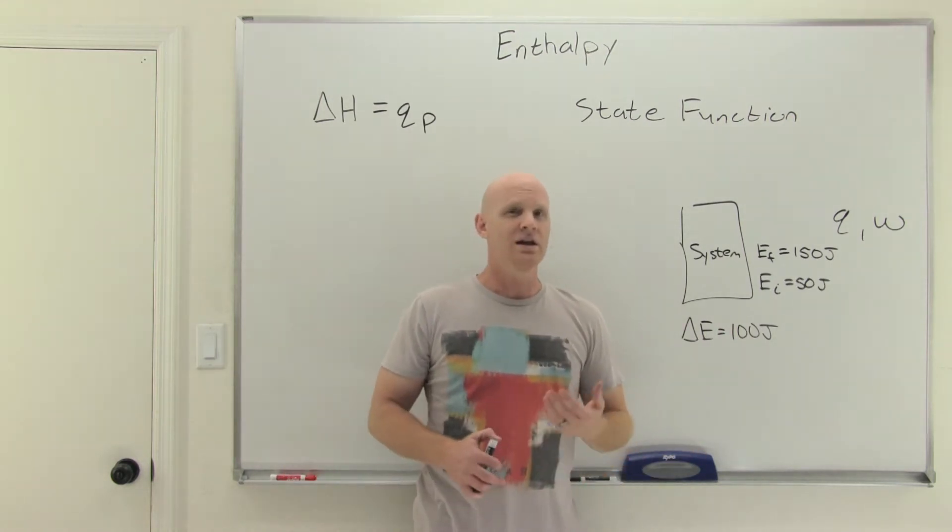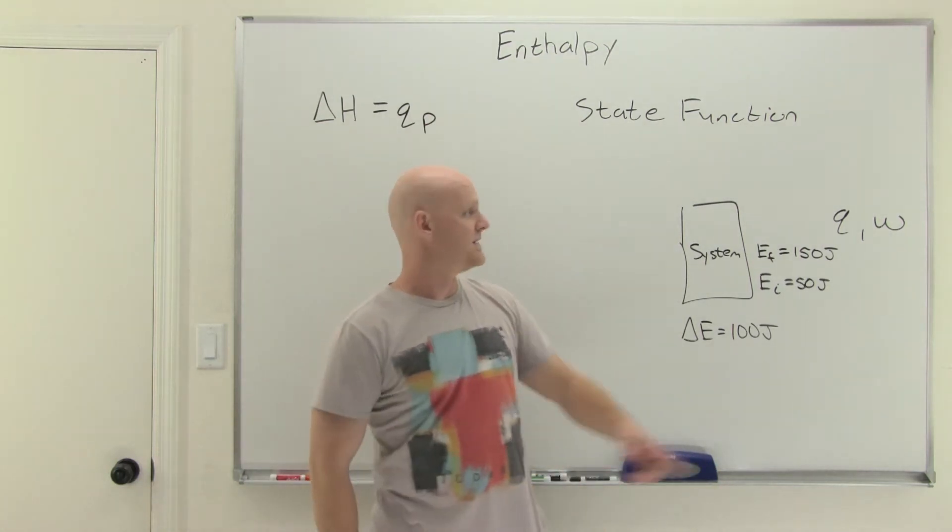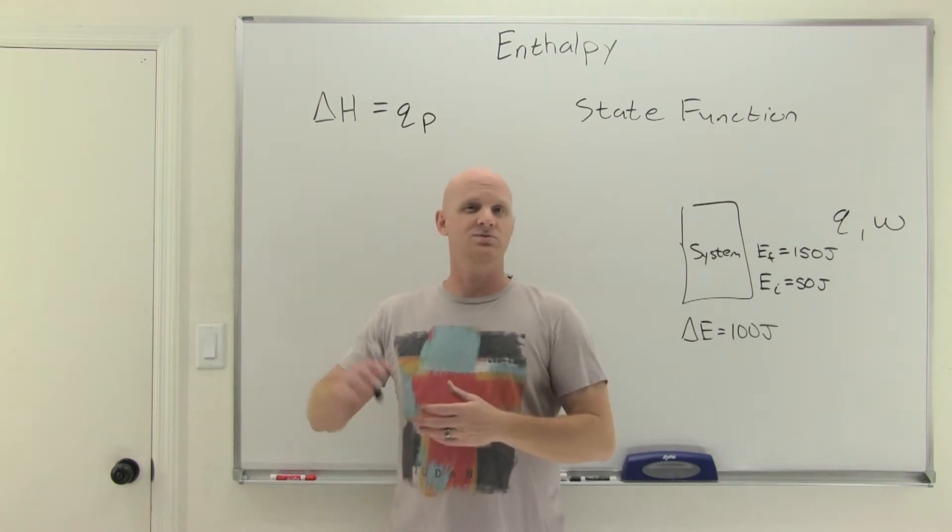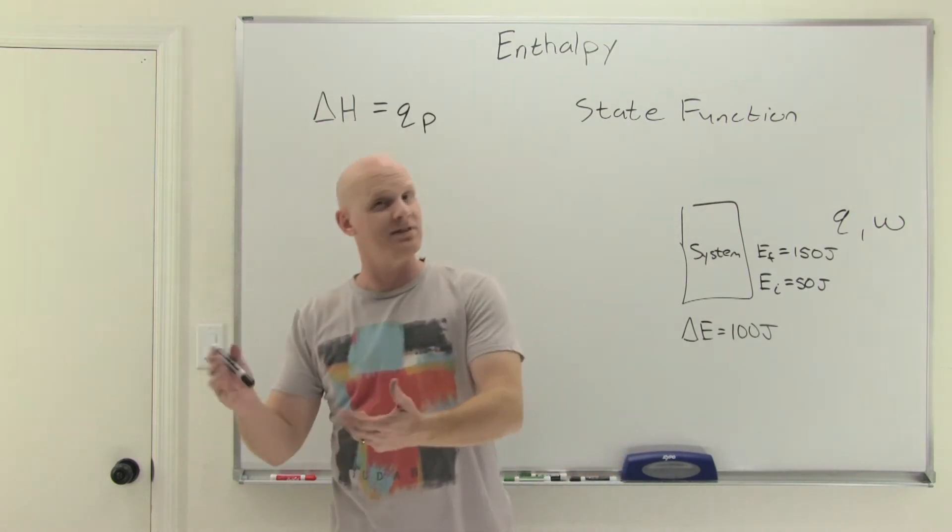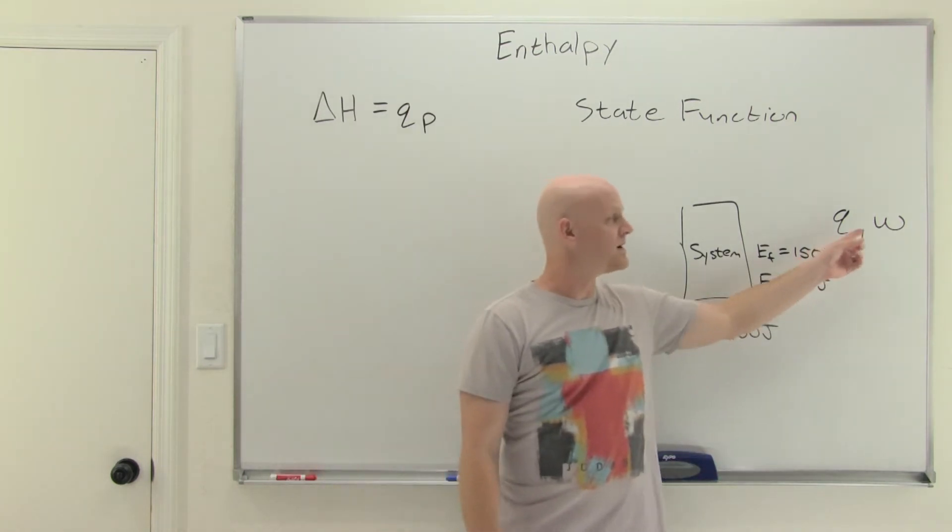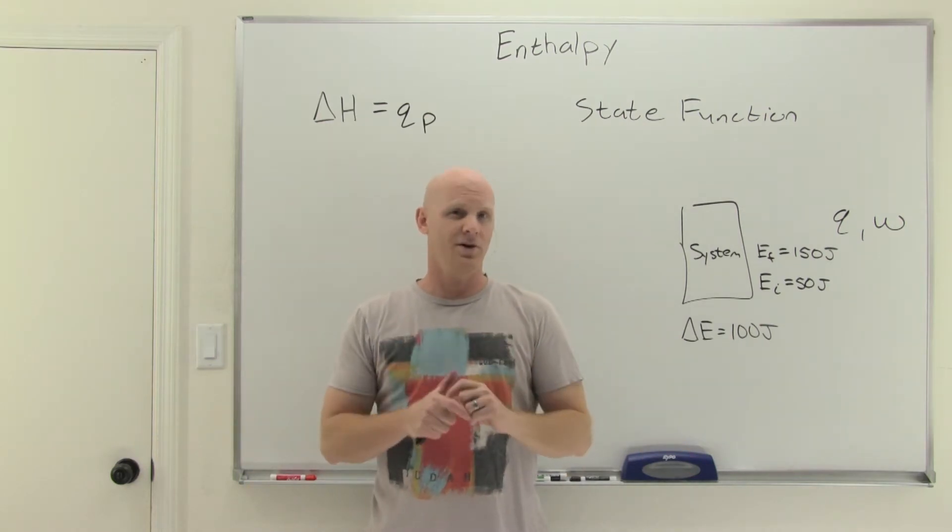Delta E is going to be 100 regardless of whatever pathway you take. You should know that just about anything you could see as a state function in chemistry, except for Q and W. They might give you a question that says which of the following are state functions, or all of the following are state functions except, or which is not a state function. As long as you know that Q and W are not state functions and everything else pretty much is, you're good to go.